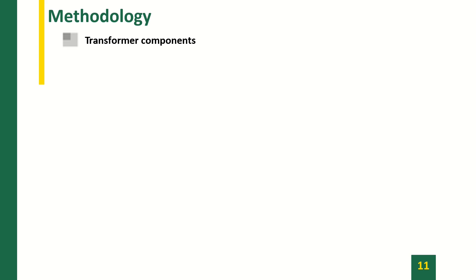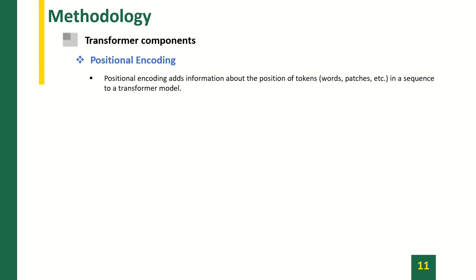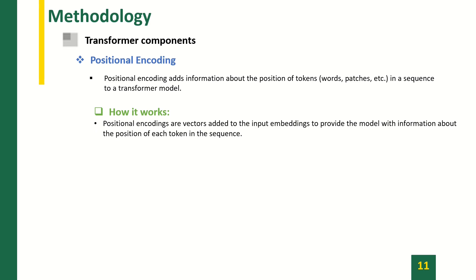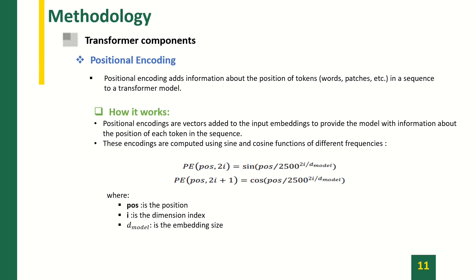We will explain the main components of the transformer. First, positional encoding. Positional encoding adds information about the position of tokens — for example, words or patches — in a sequence to a transformer model. Positional encodings are vectors added to the input embeddings to provide the model with information about the position of each token in the sequence. These encodings are computed using sine and cosine functions of different frequencies using the following formula, where 'pos' is the position, 'i' is the dimension index, and 'd_model' is the embedding size. The embedding size in our work equals 512 and the vocabulary size is 2500.